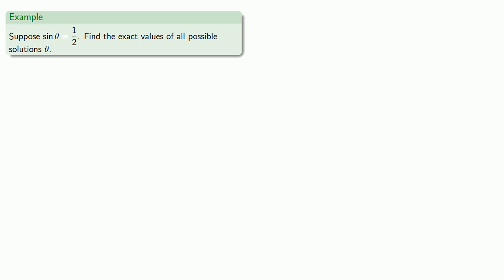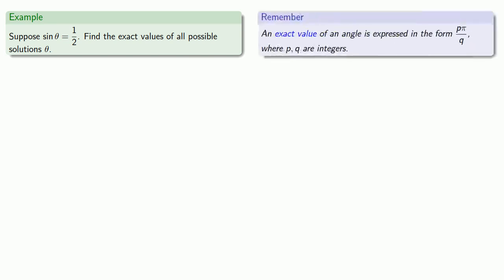So let's try to solve this. Suppose sine(θ) = 1/2 — find the exact values of all possible solutions θ. In the context of trigonometric functions, an exact value is an angle expressed in the form pπ/q, where p and q are integers. You might think of these as rational multiples of pi, and these are the exact values you should know.